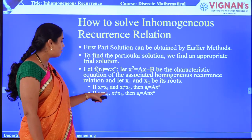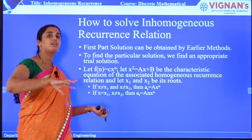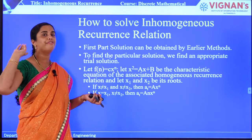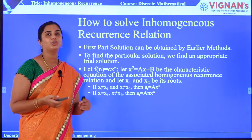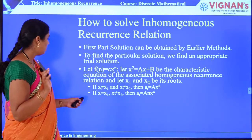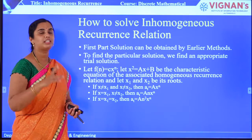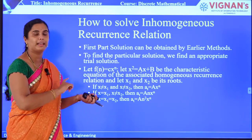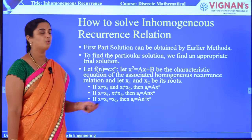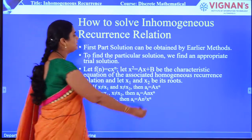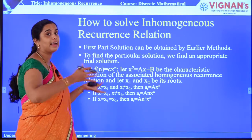The second condition: if X equals X1 but not X2 (or equivalently X equals X2 but not X1), meaning the value of X equals one of the roots, then the particular solution will be A·N·X^N. The third condition: if X equals X1 equals X2 — that is, there is a single repeated root equal to X — then AT equals A·N²·X^N. These are the particular solutions depending on the values of X, X1, and X2.